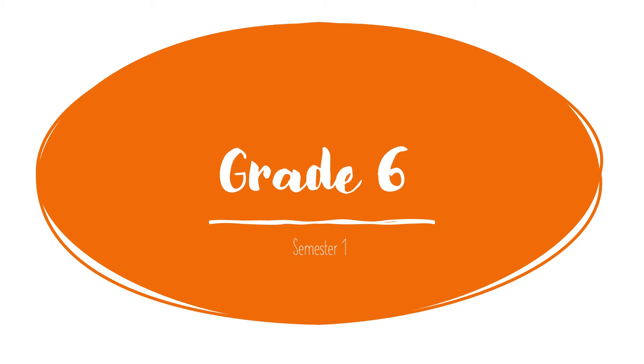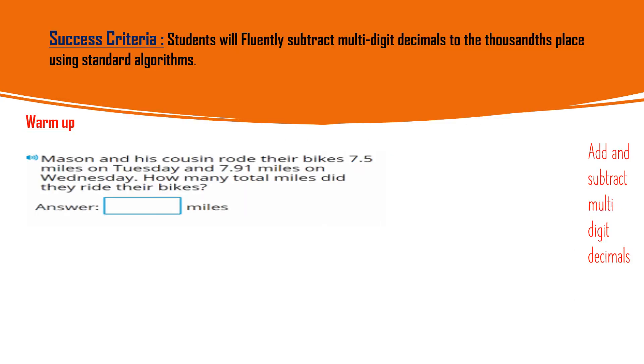A few more questions from the same lesson: add and subtract multi-digit decimals. Here is the question: Mason and his cousin rode their bikes 7.5 miles on Tuesday, so first we will write 7.5 miles on Tuesday. 7.91 miles on Wednesday, so let's write under the point - we write the point, 7 before and 91 in the end, but under each quantity we will write each digit.